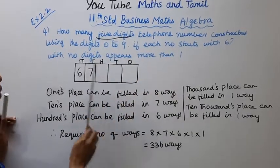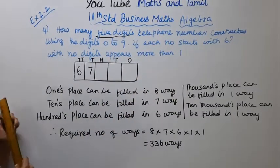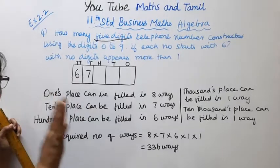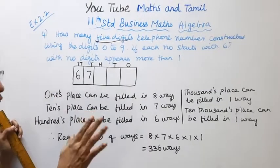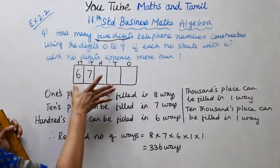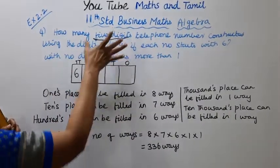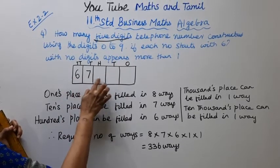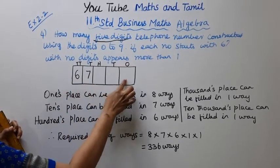Now, we have a 5-digit telephone number: 1, 2, 3, 4, 5. So we are looking at a 5-digit arrangement.